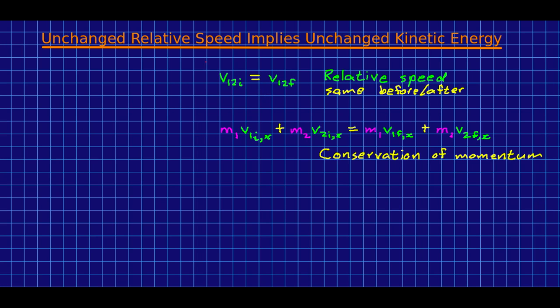The first is this: that the relative speed before the collision is the same as the relative speed after. And the other thing I've set up here is the expression which is telling us that momentum is conserved. This is only if the system is isolated, but here is an expression for the one-dimensional case along the x-axis of conservation of momentum.